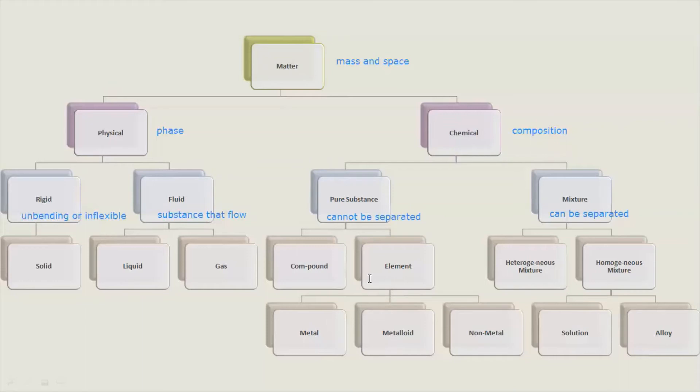An element is a type of matter that cannot be broken down into two or more pure substances by breaking bonds. There are 118 known elements, as we can see in the periodic table, wherein 91 of which occur naturally. It is identified by its symbol.